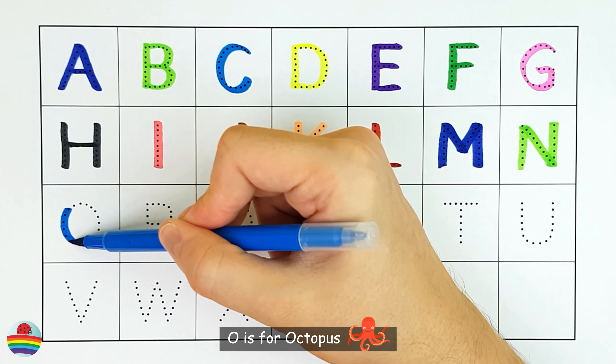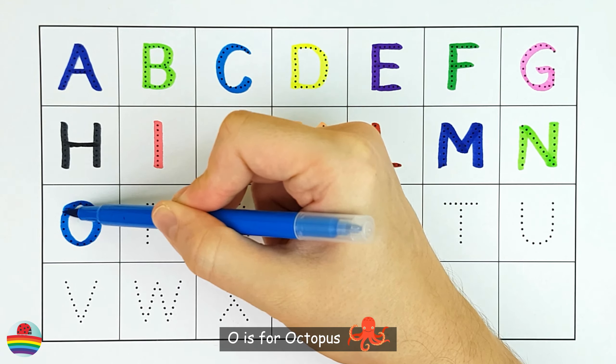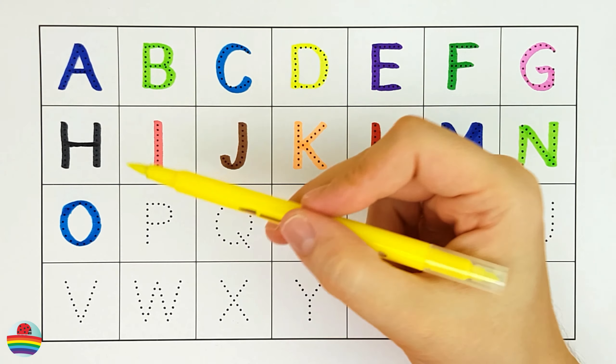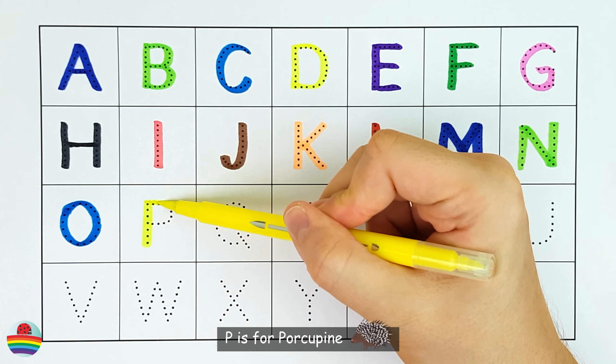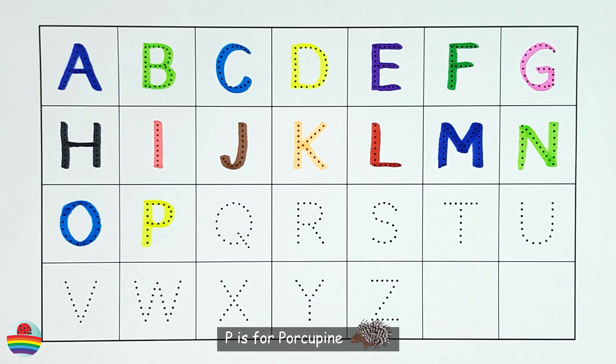O. O is for octopus. O. P. P is for porcupine.